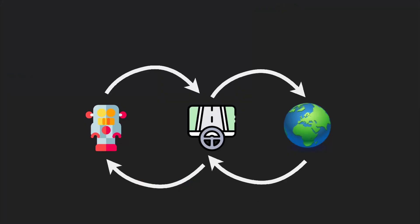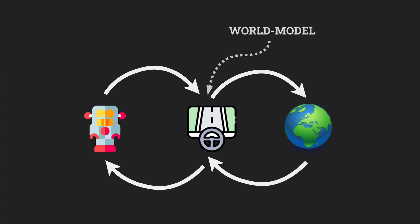In model-based reinforcement learning there are three main components: an environment, an agent that learns a policy to accomplish a task, and a world model that simulates the environment and is used by the agent for planning. Because the agent heavily relies on the world model to learn a solid policy, the world model should be a very accurate and precise model of the true environment.